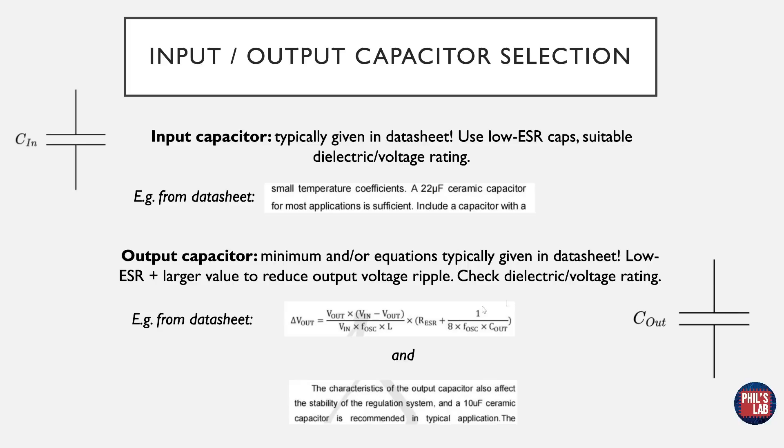Similar thoughts for the output capacitor. So the minimum and equations are typically given in the datasheet. Again, we want low ESR capacitors and typically larger values to reduce the output voltage ripple. Again, check the dielectric and voltage rating. So from the datasheet we might get an equation like this, which gives us output voltage ripple given all these parameters. And you can see we need to know oscillation frequencies, output capacitances, equivalent series resistances, and so on. But luckily the datasheet also says 10 microfarad ceramic is usually okay in most situations. I would always just increase that by amount.